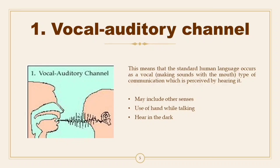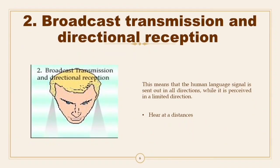This means that standard human language occurs as a vocal — making sounds with the mouth — type of communication, which is perceived by hearing it. It may include other senses, such as use of hands while talking, and hearing in the dark. This channel describes how vocal signals are used to produce language. The speaker uses a vocal tract to produce speech sounds, and the hearer employs an auditory apparatus — the sense of hearing — to receive and process those sounds.